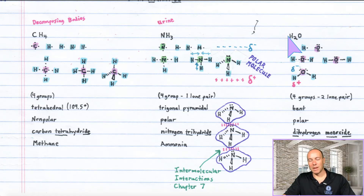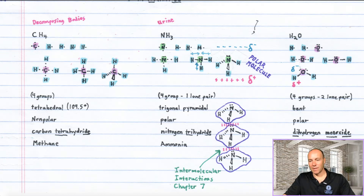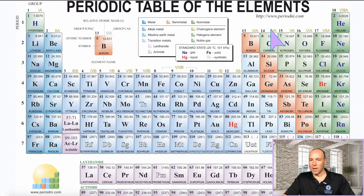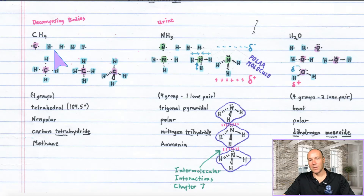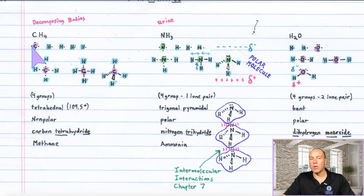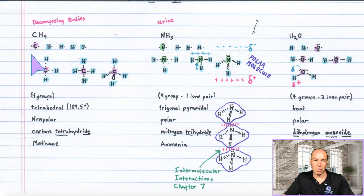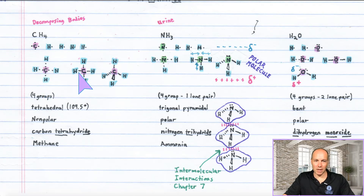Methane is CH4: one carbon and four hydrogens. Draw the Lewis dot structures — carbon gets four dots and hydrogens get one. Carbon is in group 4A for four dots, hydrogen in group 1A for one dot. Position the atoms next to each other: carbon has four single electrons that match up perfectly with the four hydrogens. Put the hydrogens around the carbon, match up unpaired electrons, form bonds, and you get four single covalent bonds. That's your Lewis structure.